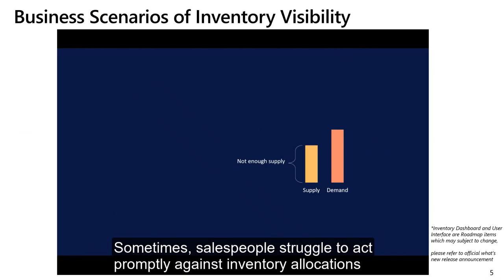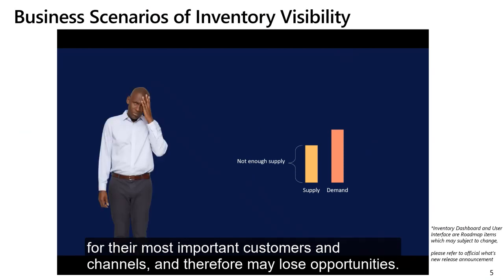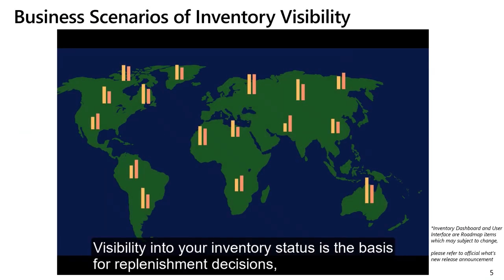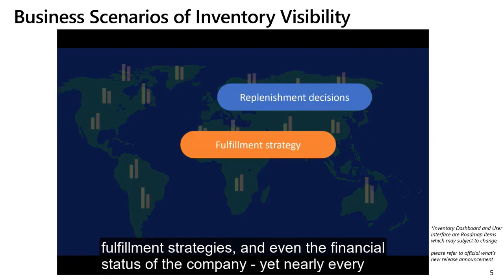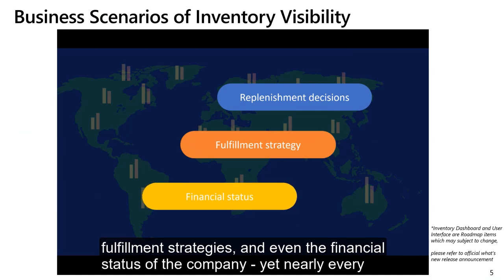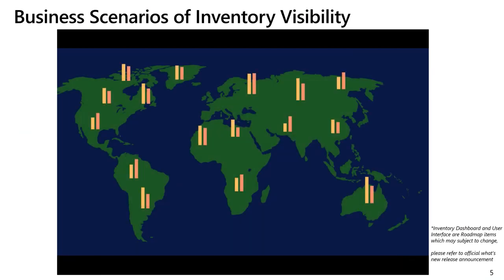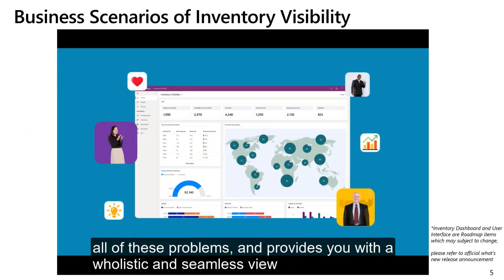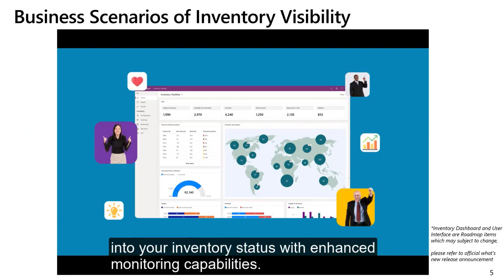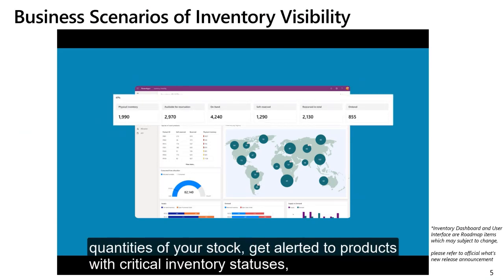Sometimes salespeople struggle to act promptly against inventory allocations for their most important customers and channels, and therefore may lose opportunities. Visibility into your inventory status is the basis for replenishment decisions, fulfillment strategies, and even the financial status of the company — yet nearly every activity related to your supply chain can affect inventory at some point in time. Microsoft Dynamics 365 Inventory Visibility Service is designed to tackle all of these problems and provides you with a holistic and seamless view into your inventory status. With enhanced monitoring capabilities, you can track in real time the on-hand, demand, and physical consumption quantities of your stock.